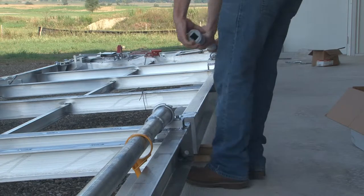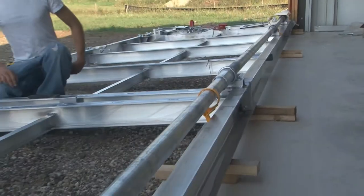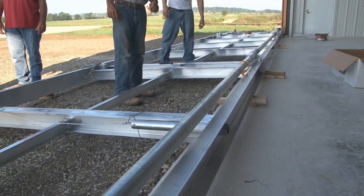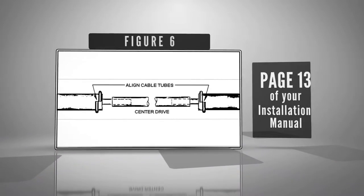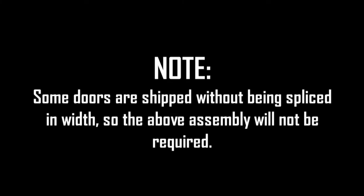Do the same with the other bottom section. Before bolting sections together, note that on the bottom sections the center drive shaft must be slid in place, keeping the cable tubes in line from one door section to the next. See Figure 6. Note: Some doors are shipped without being spliced in width, so the above assembly will not be required.